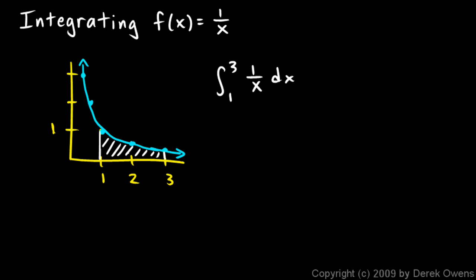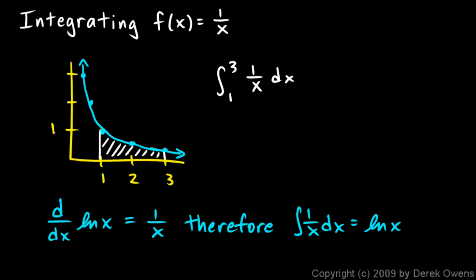So the power rule for integrals won't work here. So how do we integrate the function 1 over x? It turns out we already know how to integrate the function 1 over x, because we know this. We know that the derivative with respect to x of ln of x is equal to 1 over x. And it logically follows from that that the integral of 1 over x dx is going to be the natural log of x plus c.